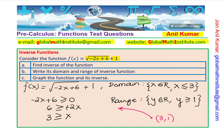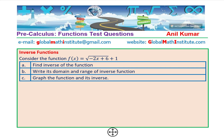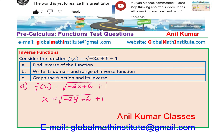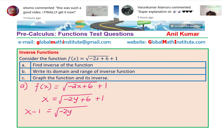When finding the inverse, the domain and range will swap. We are given f(x) = √(-2x + 6) + 1. To find the inverse, swap x and y, giving x = √(-2y + 6) + 1. The idea is now to isolate y. So we get x - 1 = √(-2y + 6).